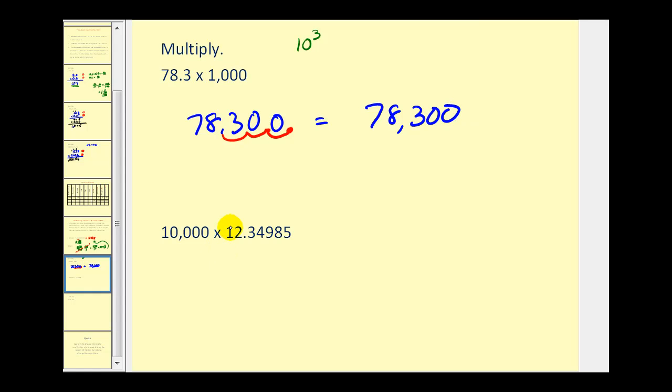On the second example, again, we can change the order of this product. In this case, I would advise that. So on this problem, we'll take advantage of the commutative property of multiplication and change the order.